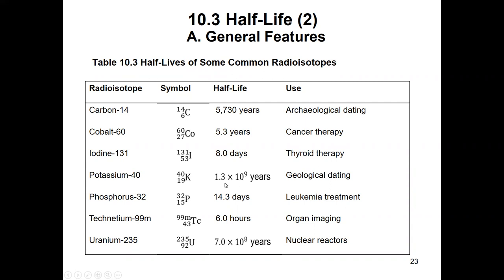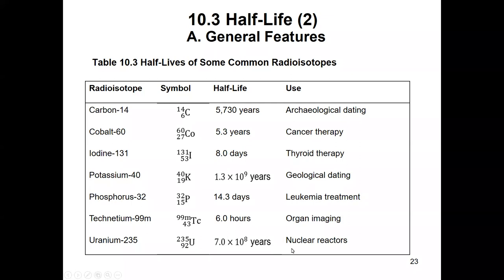Phosphorus-32 has been used in leukemia treatment and has a half-life of 14.3 days, as we saw in the example. Technetium-99 metastable has a half-life of 6 hours — pretty short — and it's used for organ imaging. Uranium-235, which is used in nuclear reactors to generate energy in nuclear power plants, has a half-life of 7 × 10⁸ years. These examples show how the half-life can vary a lot from one isotope to another.